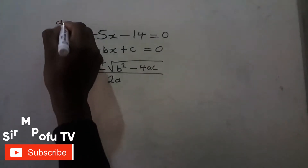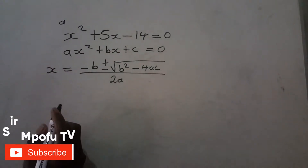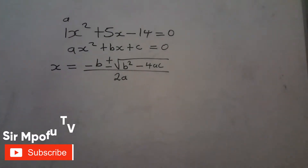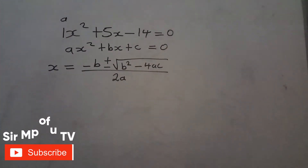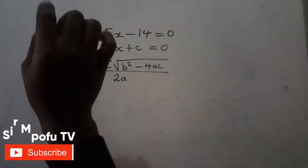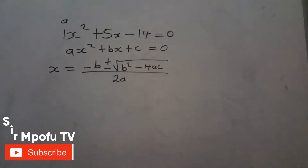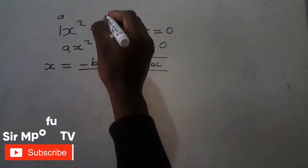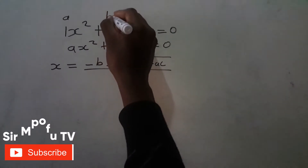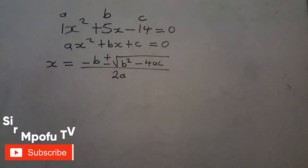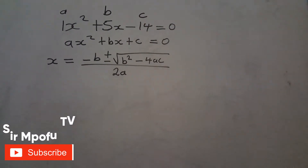When you know the quadratic form, you must indicate the values of a, b, and c. Here we don't have a number before x squared, so automatically it's 1 — the coefficient of x squared is 1, because 1 times x squared is just x squared. Our b is positive 5, and our c is negative 14.